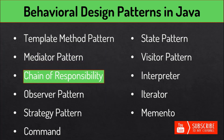In the Chain of Responsibility pattern, a client passes a request to a sequence or chain of objects. The object in the chain decides which object will process the request and whether there is a need to send it to the next object. For example, if we have a chain of multiple catch blocks after a try, if one catch block is unable to process it, it forwards the request to the next catch block.